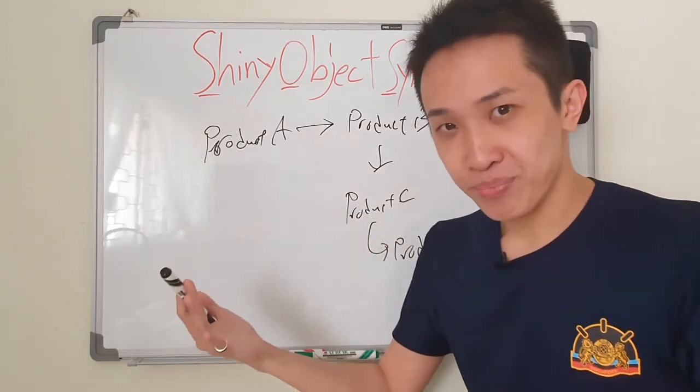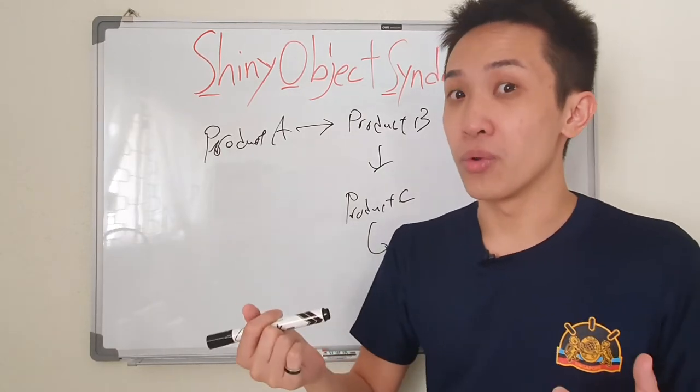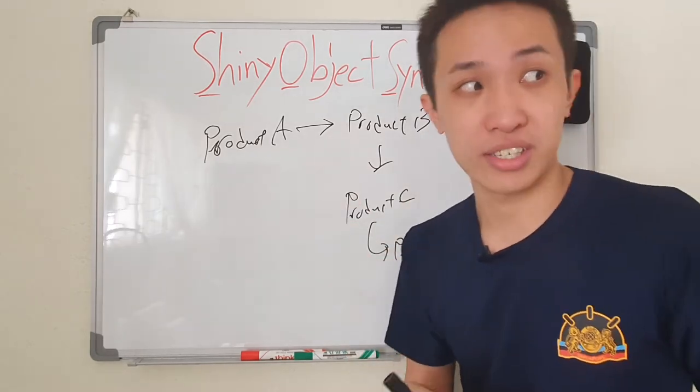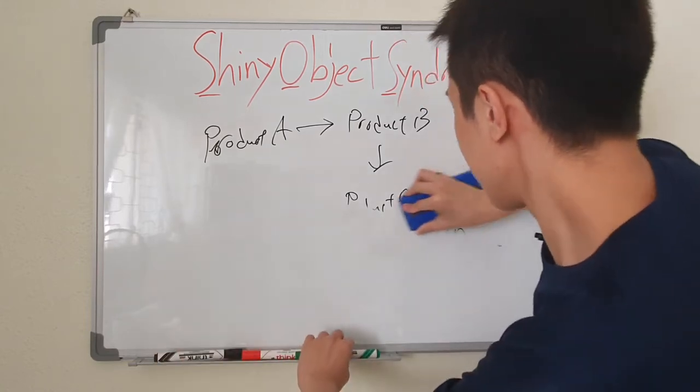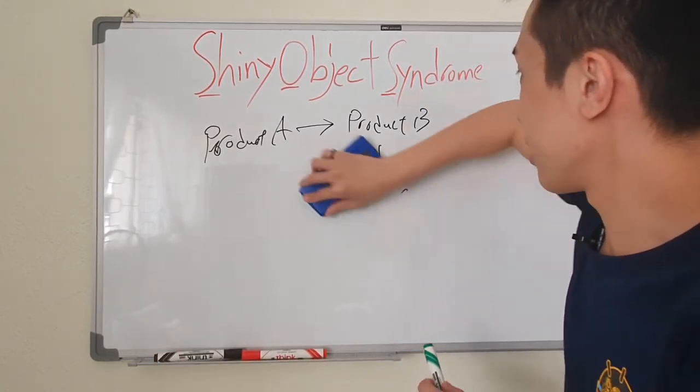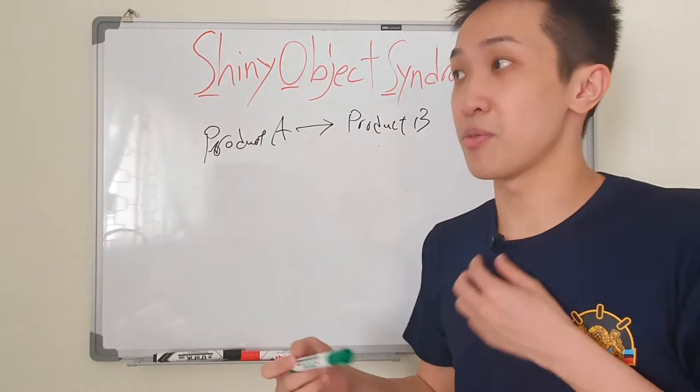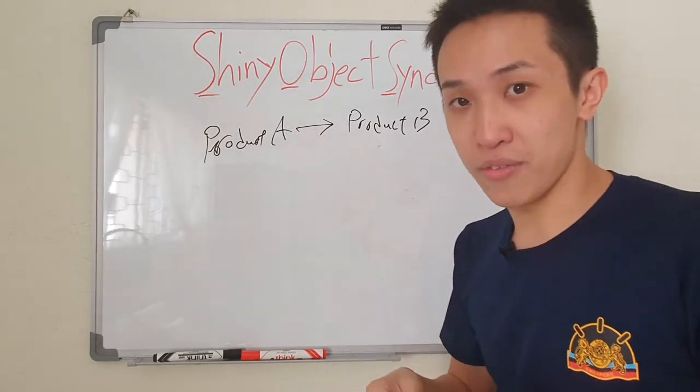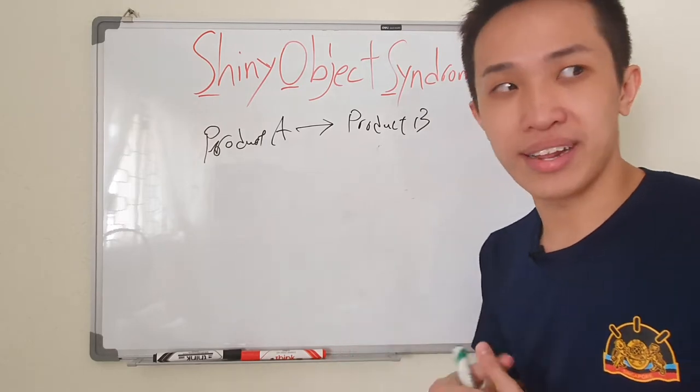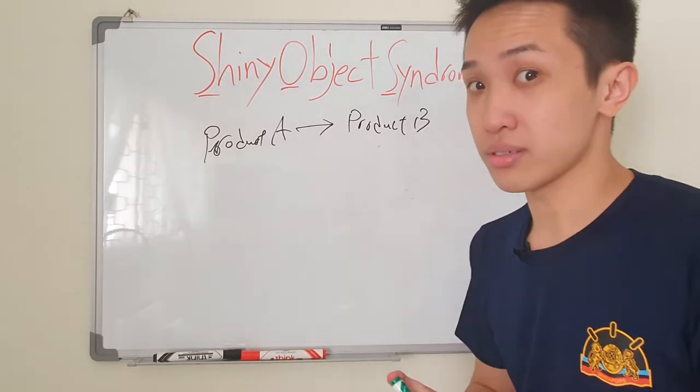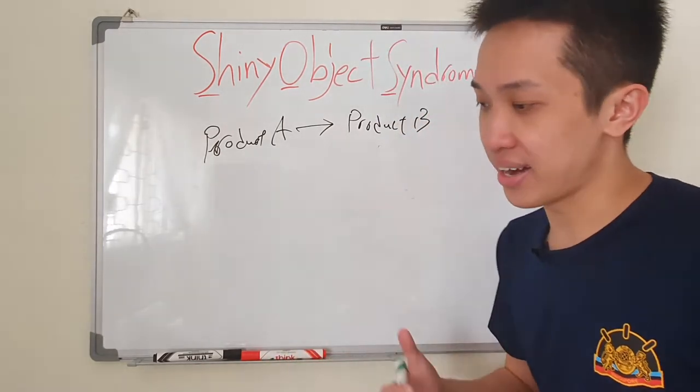So the question is, how do you get away from shiny object syndrome? And it's really not the most difficult, trust me. Now I'll keep product A and B as an example for you guys. Say you have already purchased product A, doesn't matter what, high ticket, low ticket, anything. As long as you have purchased product A, you see product B, then it pops up.